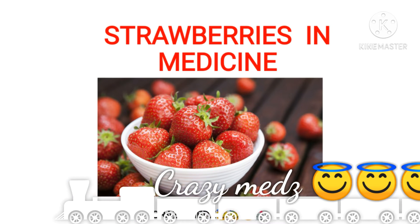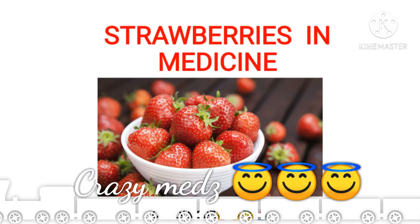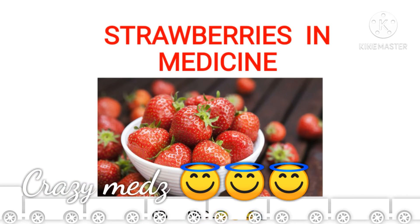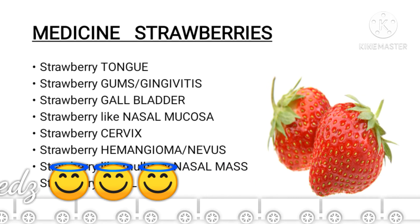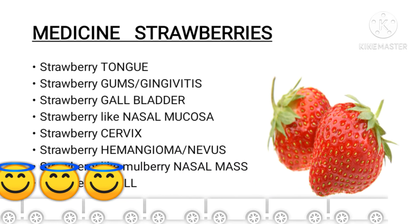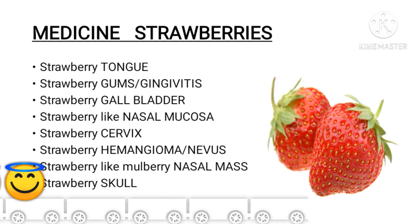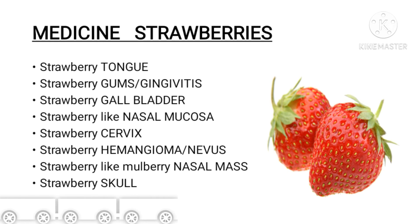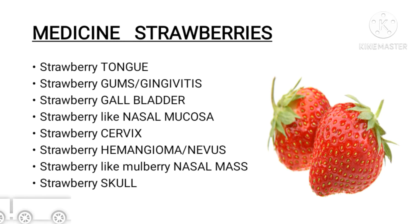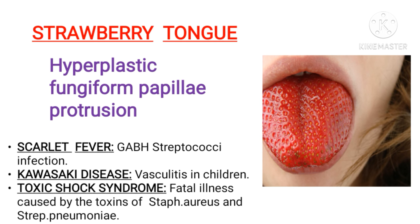In this video we are going to see all the strawberry signs and symptoms which are more common in medicine. Those signs and symptoms include strawberry tongue, gums or gingivitis, gallbladder, nasal mucosa, cervix, hemangioma or nevus, nasal mass, and skull. These signs and symptoms are named because they resemble a strawberry in appearance, and not because of consuming strawberry.